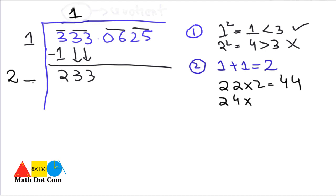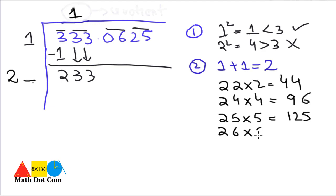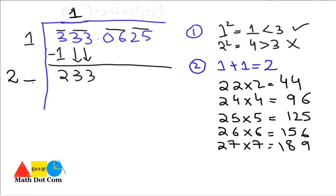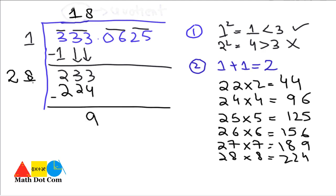Continuing: 26×6 = 156, 27×7 = 189, 28×8 = 224. So 224 is the nearest number we can consider. We write 8 in the blank: 28×8 = 224. Subtracting, 233 − 224 = 9. Then we bring down the next pair '06', giving us 906.